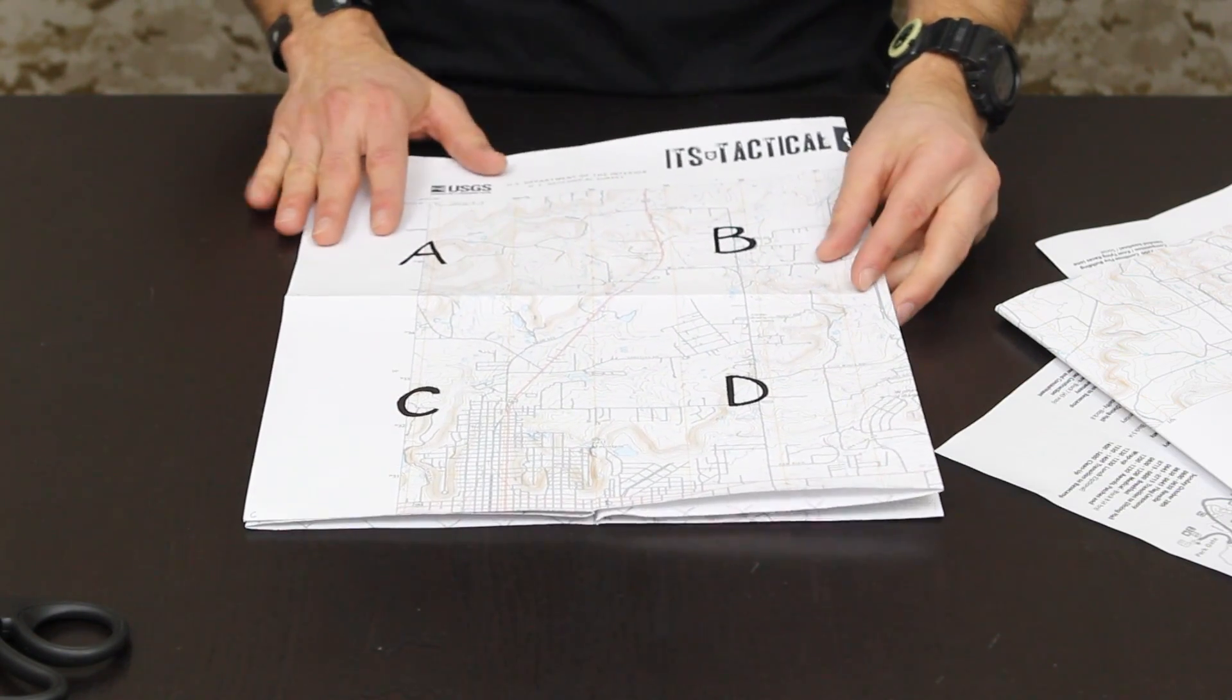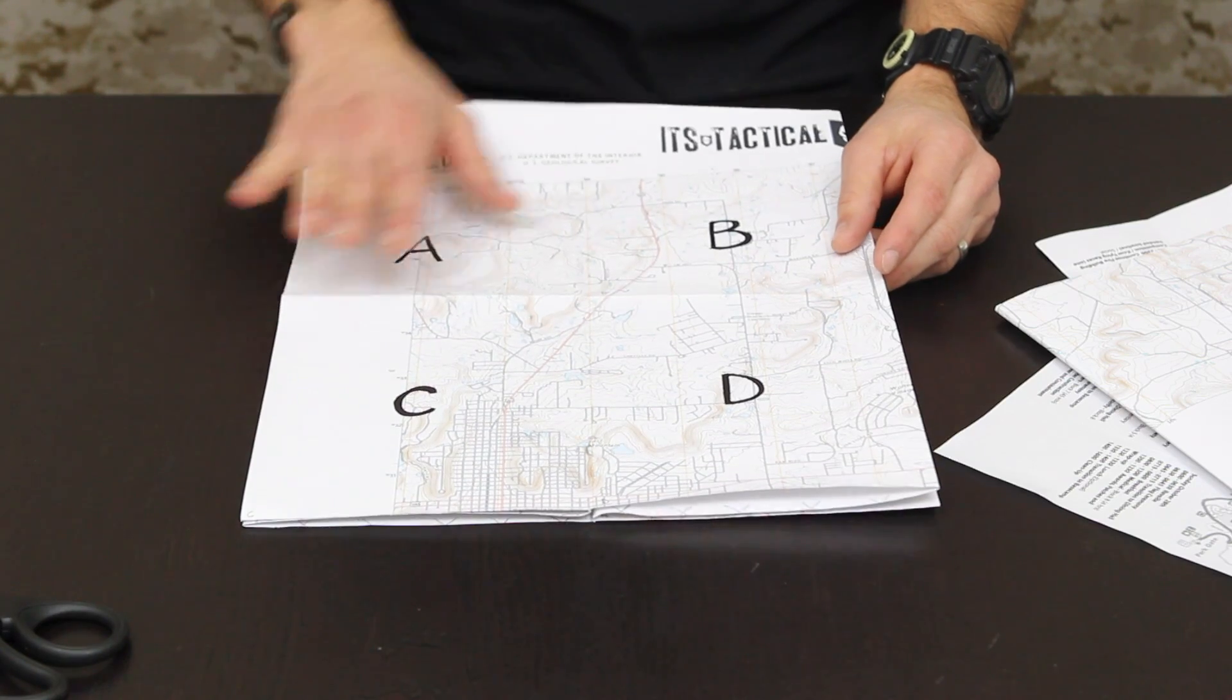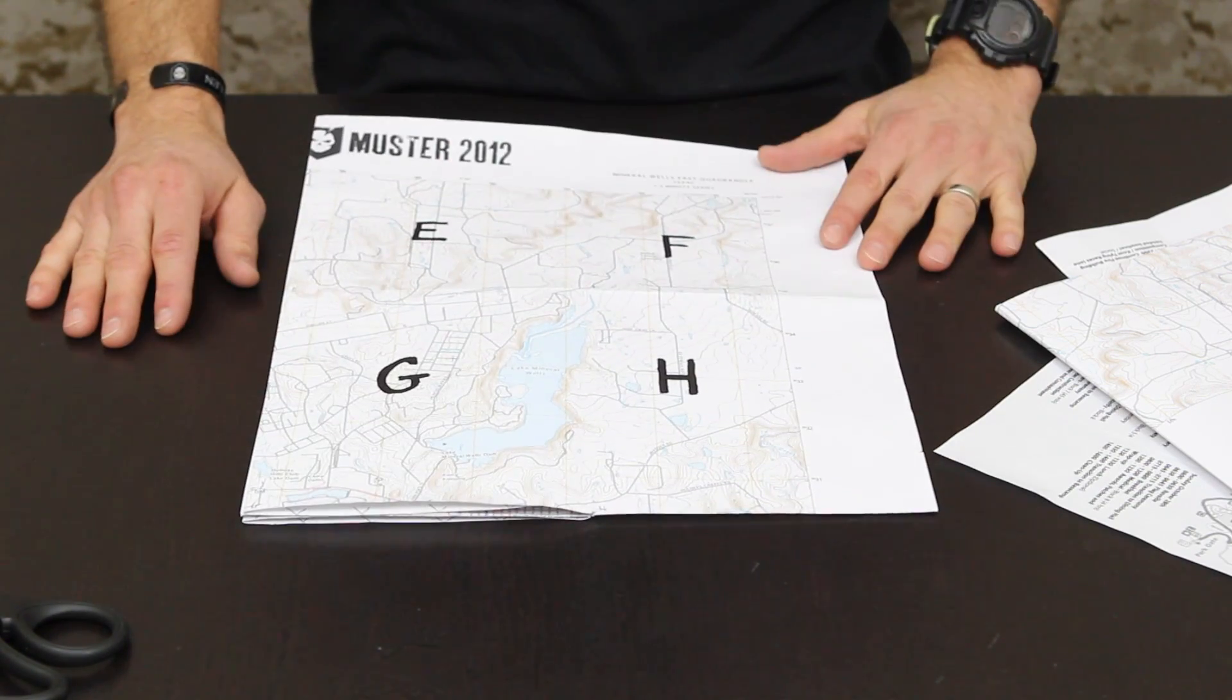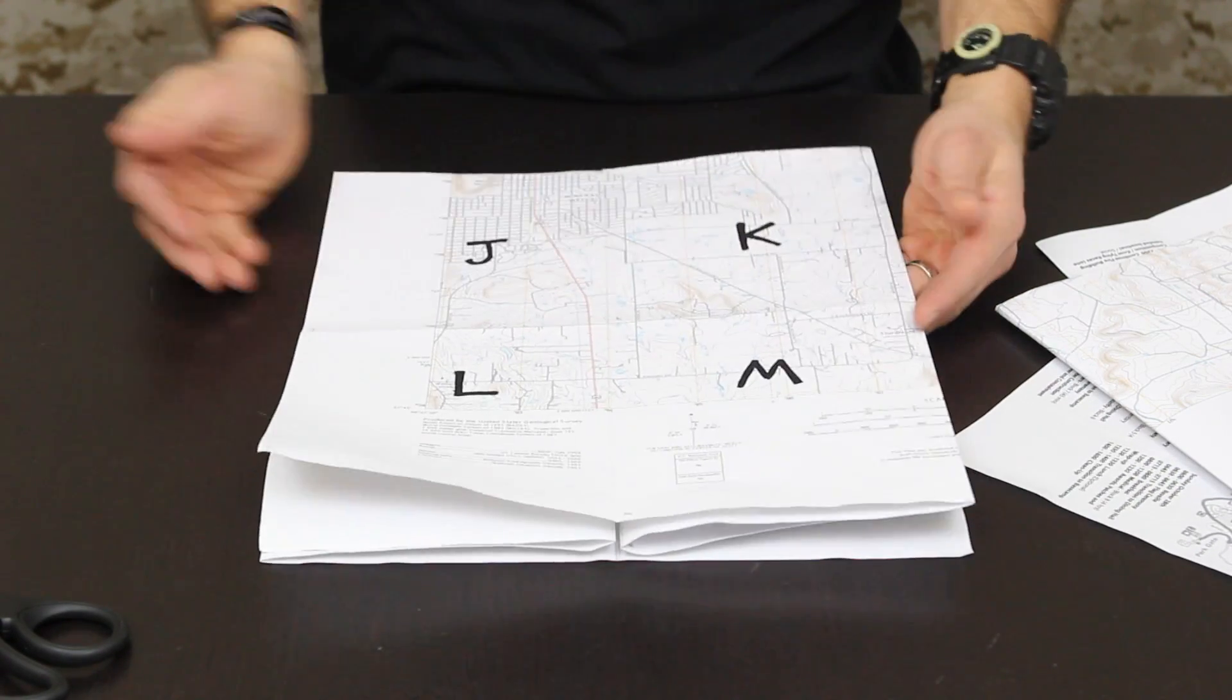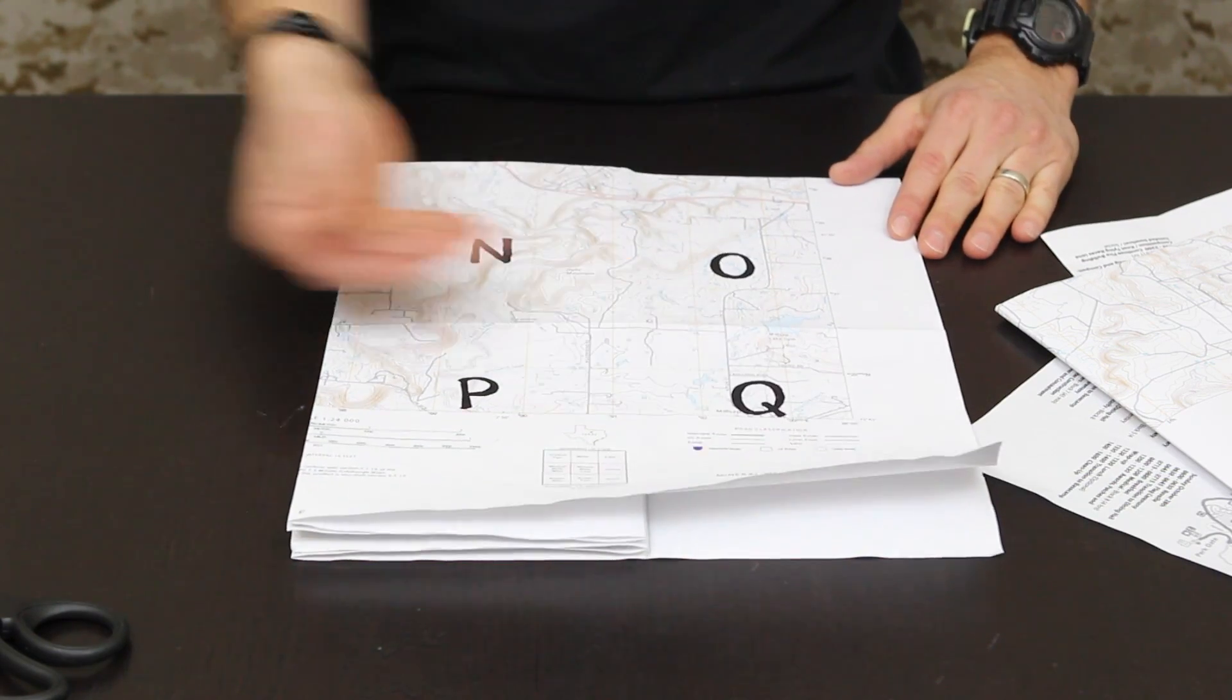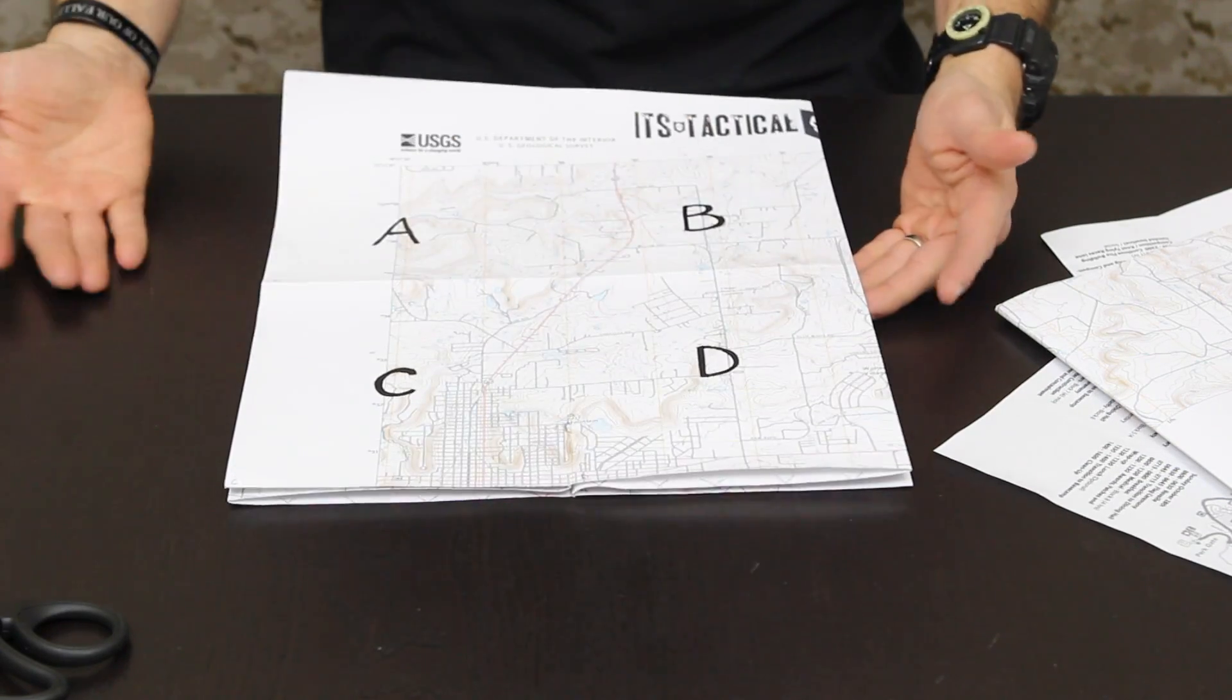So by making a simple cut on the map, you can easily flip from four quadrants basically anywhere on the map. So by using this method, you see A through D there, just a simple flip there gives you E through H, a little turn of the map and a flip gives you J through M as well as another turn gives you N through Q.